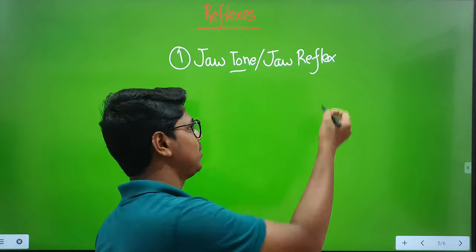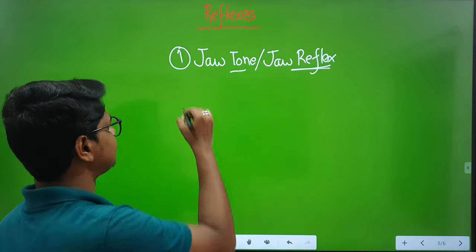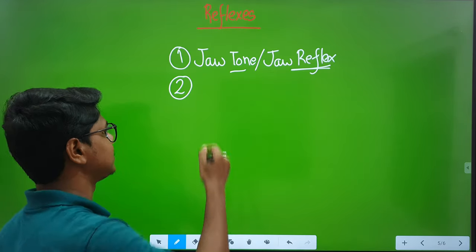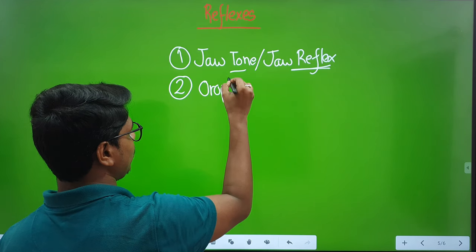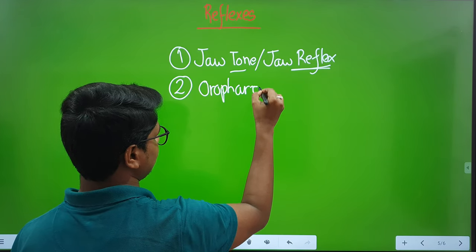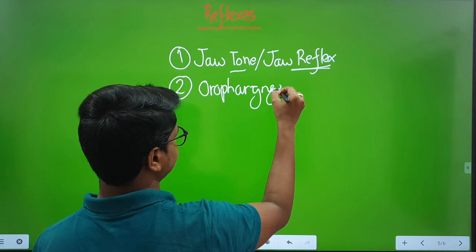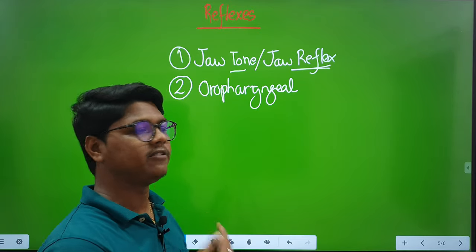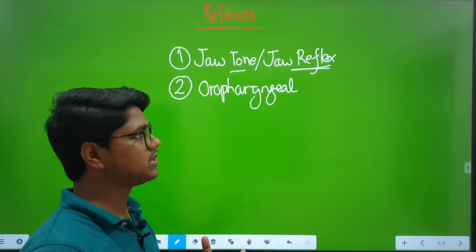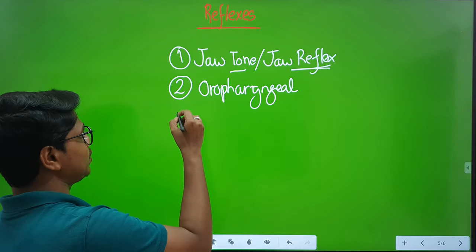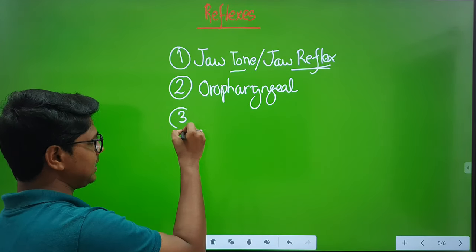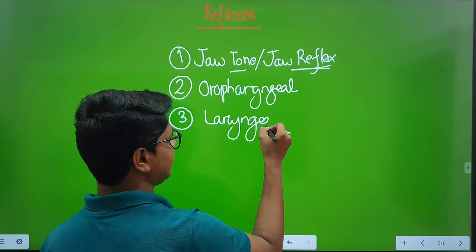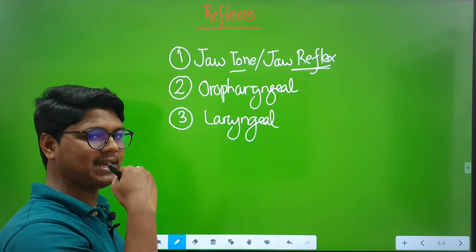When you try to separate the jaw, the tone is known as jaw tone. If the animal tries to bite, it is jaw reflex. Next, after jaw, comes the oropharynx — the oropharyngeal reflex. When you touch the oral cavity or the pharynx, the response is known as the oropharyngeal reflex. After oropharynx comes the larynx — this is known as the laryngeal reflex.